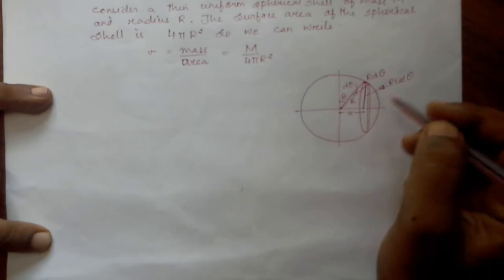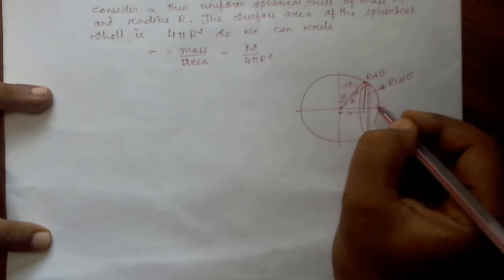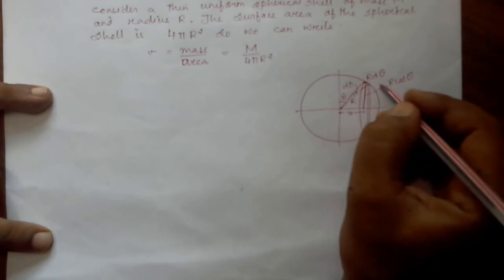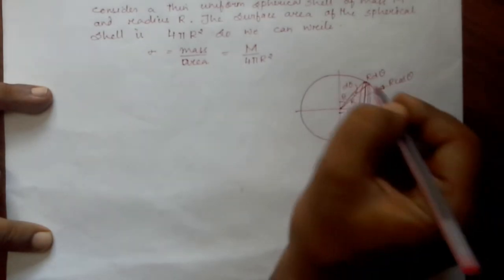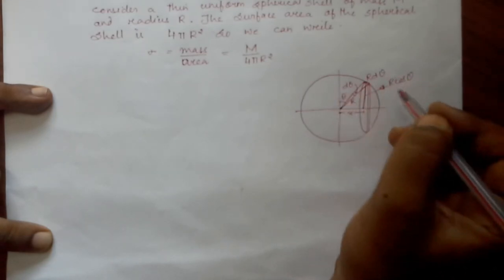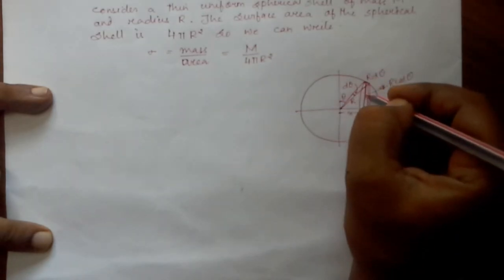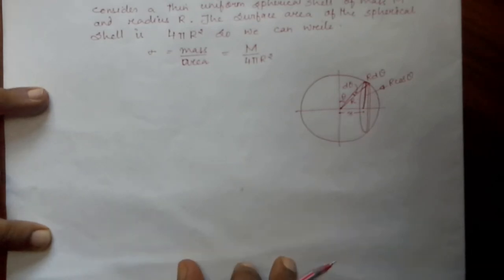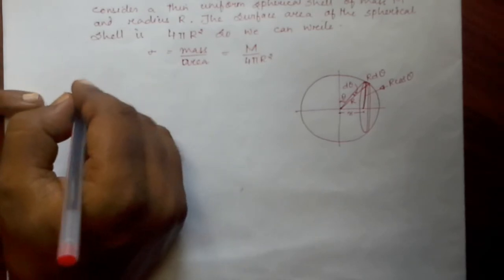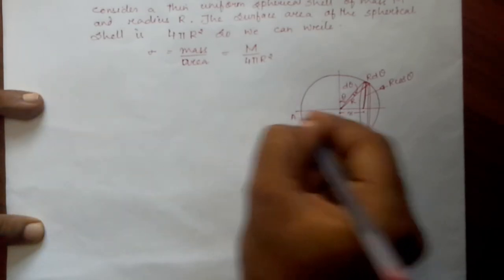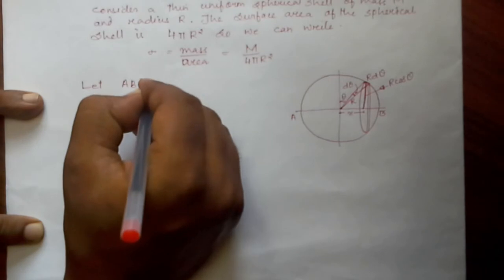We have divided the shell into concentric rings. Consider a ring at a distance x from the axis of rotation, where the shell has radius r. This thin elemental ring has a thickness of r·dθ. If this angle is θ, then the small angle is dθ, and the radius of the ring is equal to r·cosθ.